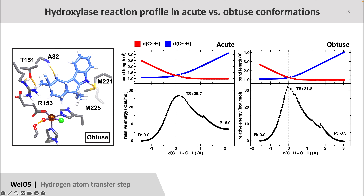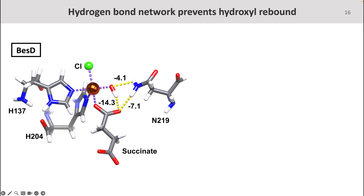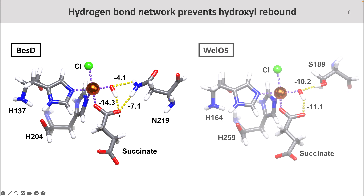These observations make sense in the context of previous non-heme iron research, as it is known that halogenases have slower reaction kinetics and that their slower reactions may allow them to disfavor the hydroxyl rebound reaction in favor of halogenation, in a process known as programmed inefficiency. Additionally, during our calculations we also observed the formation of complex hydrogen bonding networks around the iron hydroxyl. These networks involve succinate and a residue from the first coordination sphere and are facilitated by the monodentate coordination of succinate, which is believed to be more common in halogenases. What was even more exciting was that we saw the same mechanism across two different halogenases, suggesting that it may be a more general trend that will be observed in other halogenases.